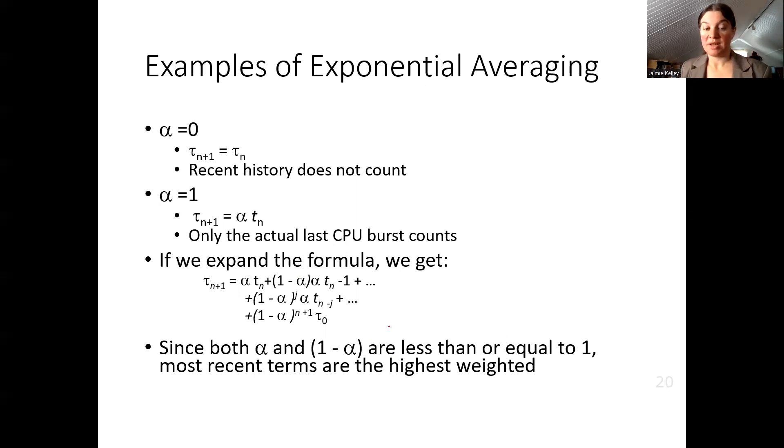So what is happening here is we are going to use alpha multiplied by our most recent CPU burst, and then we are going to multiply 1 minus alpha. The rest of what we have here is actually an expansion of the formula because we have the second most recent CPU burst multiplied by alpha, and then we are adding together 1 minus alpha multiplied by the next most recent CPU burst, and eventually we would end up back at 1 minus alpha multiplied by the original first CPU burst.